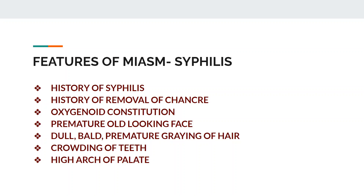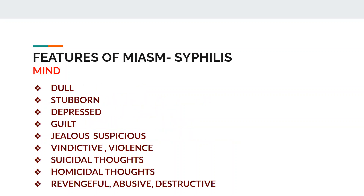There will be history of removal of chancre by surgery or by cauterization. The patient will present with an oxygenoid constitution. There is a premature old-looking face, dull patient with baldness and premature greying of hair, crowding of teeth and high arch of palate. These are all general features of syphilitic miasm.